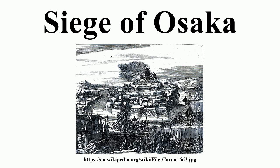Outset: When Toyotomi Hideyoshi died in 1598, Japan came to be governed by the Council of Five Elders, among whom Tokugawa Ieyasu possessed the most authority. After defeating Ishida Mitsunari in the Battle of Sekigahara in 1600, Ieyasu essentially seized control of Japan for himself and abolished the council. In 1603, the Tokugawa shogunate was established, with its capital at Edo.